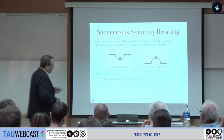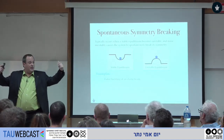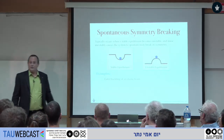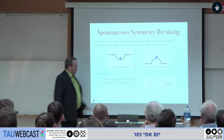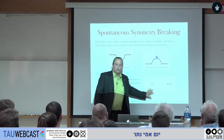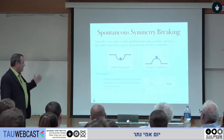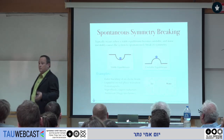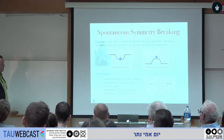If we perform this experiment many times, the overall outcome will be symmetric — half the times it falls right, half the times left — but in any given experiment the symmetry will be broken. This happens with Euler buckling of a compressed rod, with the transition from liquid to solid breaking continuous translational symmetry to a discrete set, and with ferromagnets, superfluids, superconductors, and the Higgs mechanism.